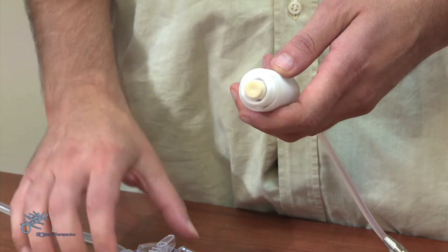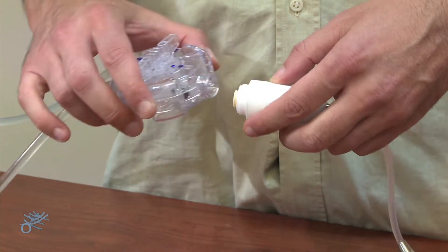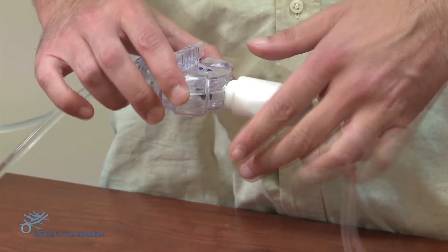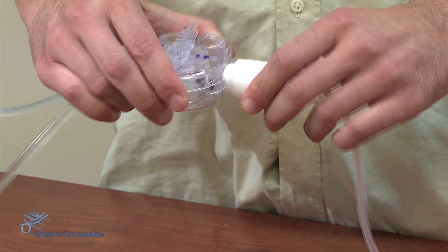We screw the newly freed extremity of the Desmo connector to the extremity of the Desmo patient set until we hear the confirmation click of the anti-unscrewing wings.